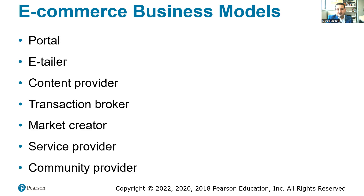The e-tailer business model is where sellers sell physical products to consumers through e-commerce — examples include Amazon and eBay. A content provider builds content such as the Wall Street Journal and generates revenue from advertising or subscriptions. Netflix, Hulu, Disney Plus, and Apple's iTunes also provide content.